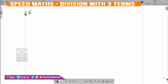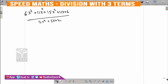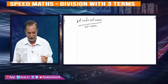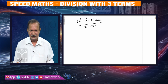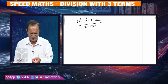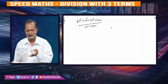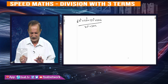Now we have a problem: 6x to the power of 4 plus 11x cube plus 15x square plus 11x plus 6, divided by 2x square plus 3x plus 2. But this is impossible as a random term. Here we need to use a single term.